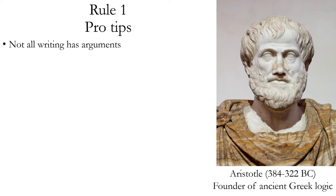Let's think of some further tips to apply in Rule 1. Rule 1 is all about identifying the parts of arguments — identifying what the conclusion is and what the premises are. But the first thing to keep in mind is not all writing or speech has arguments. Sometimes you're just reporting information, giving advice or a warning, trying to get someone to do something, or asking a question. None of those types of speech count as arguments.